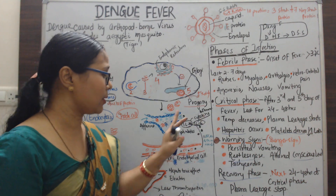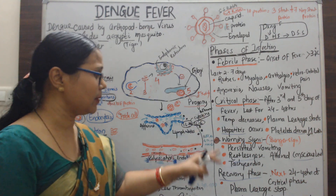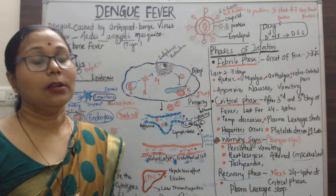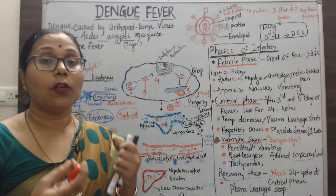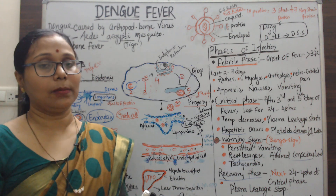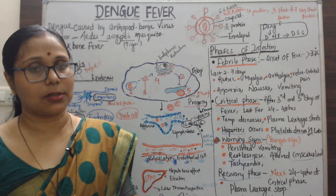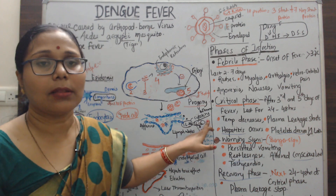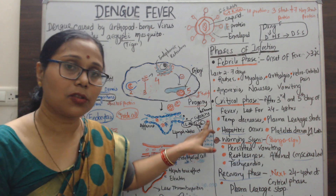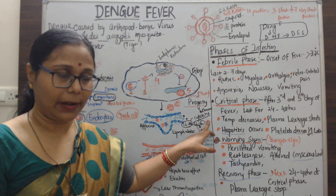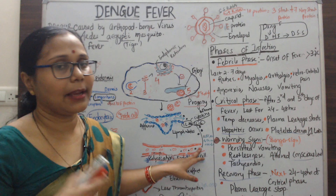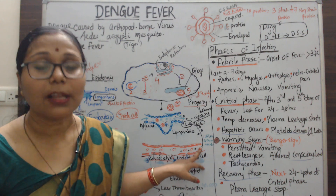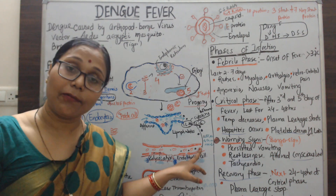A large number of cytokines are formed, causing an overdrive of the immune system. This excess of cytokines is called a cytokine storm. The cytokine storm has a negative effect — it affects the endothelial cells lining the inner layer of blood vessels.